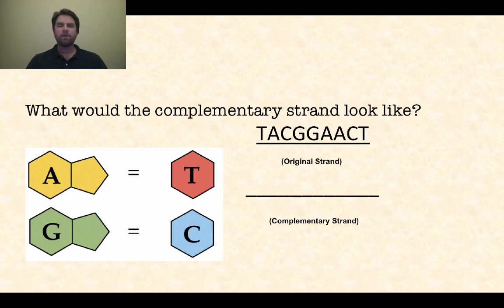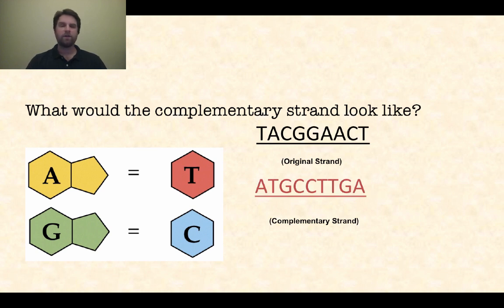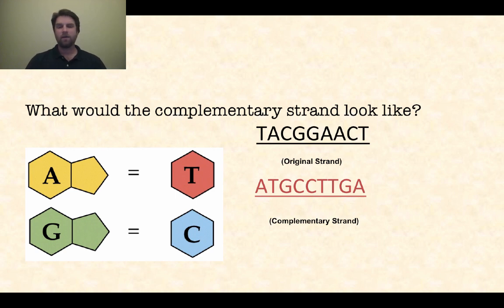When looking at complementary strands, if I have a strand of DNA with a certain sequence — say T, A, C, G, G, A, A, C, T — and you want the complementary strand, you write out the complementary base for each one. So the first letter T pairs with A, A pairs with T, and so on and so forth. The complementary strand would be A, T, G, C, C, T, T, G, A. That is how base pairs work — starting with one strand and pairing the bases gives you the complementary strand shown in red.